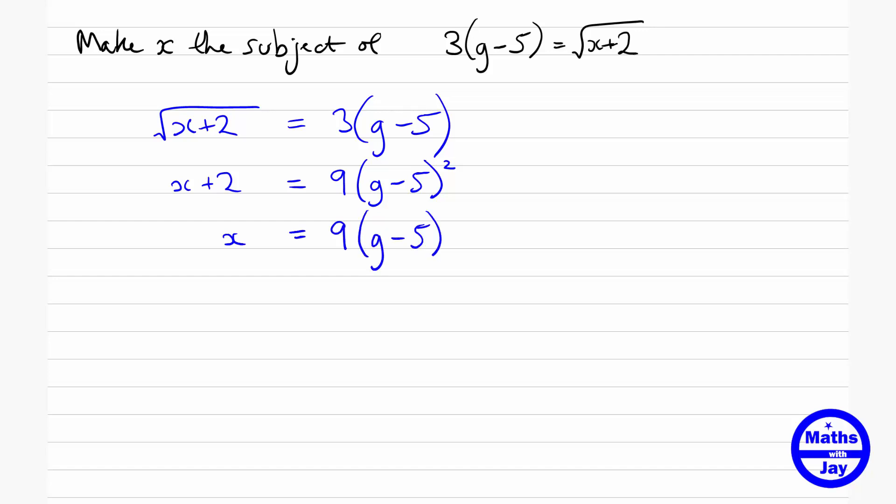So 9 times g minus 5 squared subtract 2. Obviously we want to check that this is correct, and a simple way of doing this is to look back at the original formula and substitute in a value for x and find g, and then check that our answer gives the original x value.